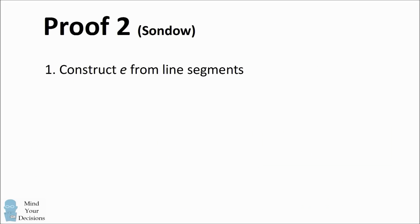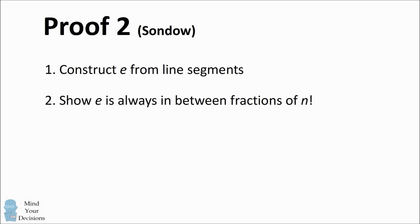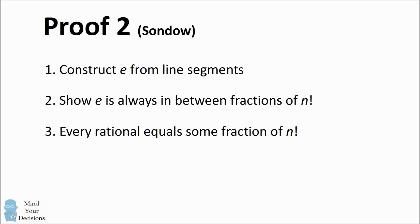A second proof by Jonathan Sandow is a geometric interpretation. We're going to construct E from line segments. We'll show that E will always be between fractions of n factorial, and that every rational number would equal a fraction of some n factorial. Since E cannot equal a fraction with denominator n factorial, this means E is irrational.